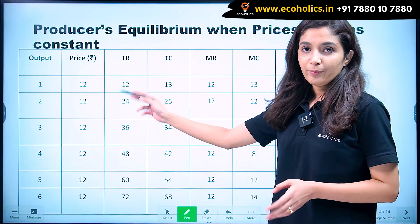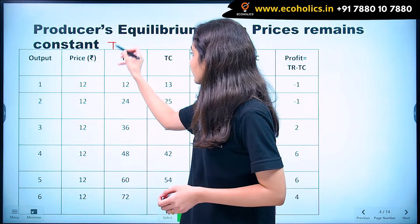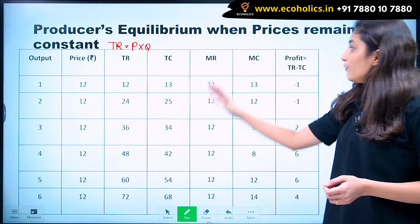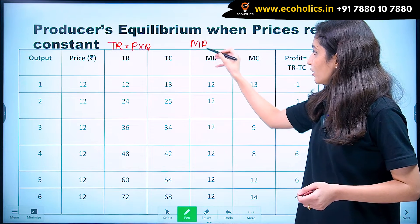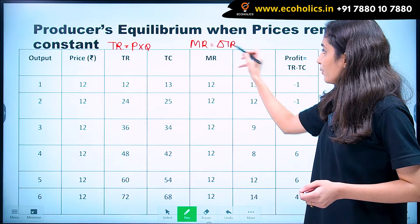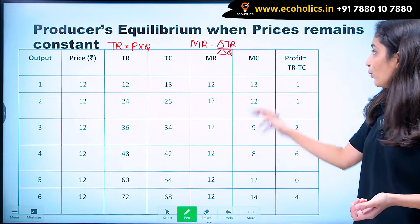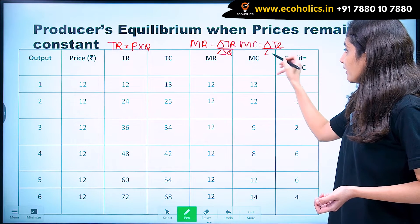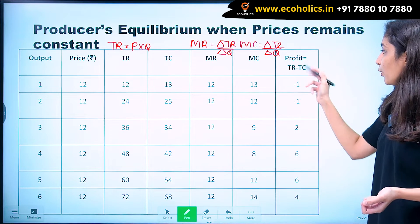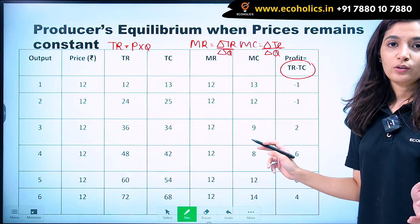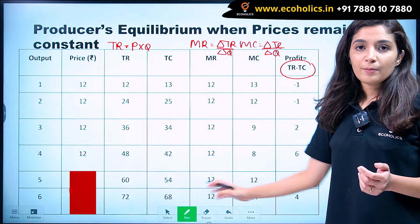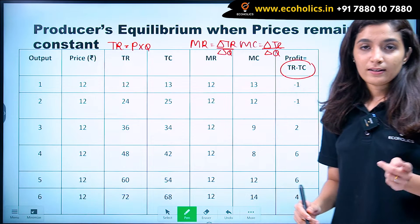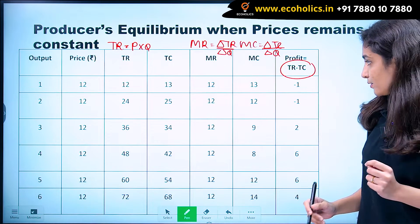Coming on to our schedule, we have output, price, total revenue — which equals price into quantity — total cost, marginal revenue (which is delta TR by delta Q), marginal cost (which is delta TC by delta Q), and profit, which is simply the difference between total revenue and total cost.